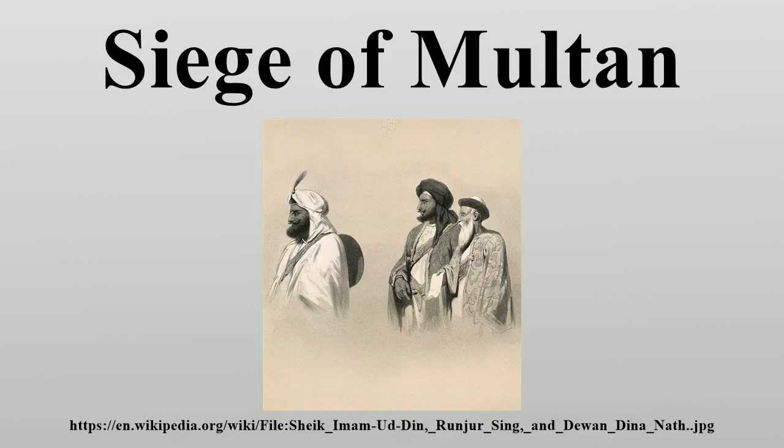Multan had been captured and incorporated into the Sikh Empire of Ranjit Singh in 1818. In 1845, although the population was almost entirely Muslim, it was ruled by a Hindu vassal, Mulraj. In that year, the First Anglo-Sikh War broke out and was won by the British East India Company. There was an uneasy peace for three years, during which Mulraj attempted to maintain practical independence while being nominally subject to the East India Company.